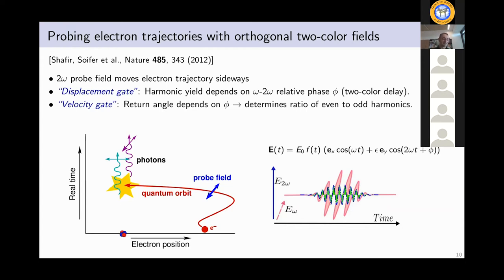There's also another gate, the velocity gate, and that is to say that also the return angle of the electron depends on the relative phase of the two colors. And if you think about that in a bit more detail, you actually find that this determines the ratio of even to odd harmonics. And that's another observable, that's a second observable you can measure.